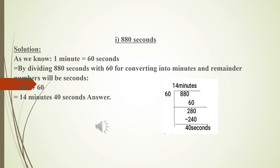Now look at part I: 880 seconds. We divide 880 by 60. This is a longer division. 60 multiplied by 14 is 840. 880 minus 840 gives a remainder of 40. So the answer is 14 minutes and 40 seconds.